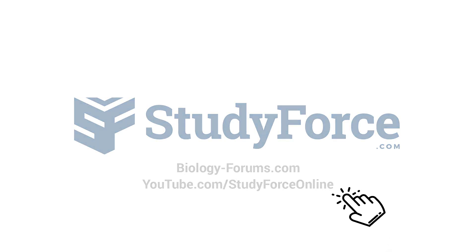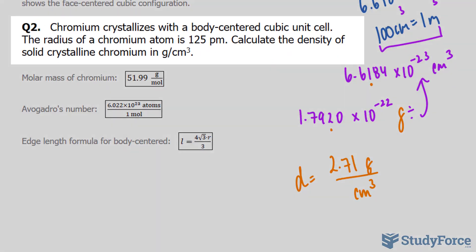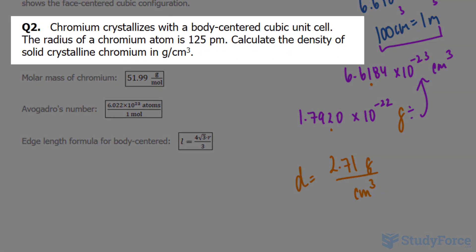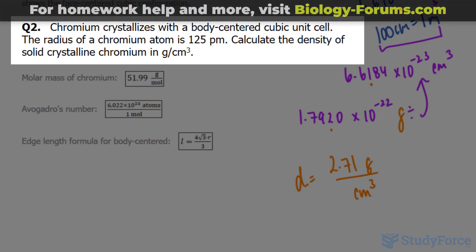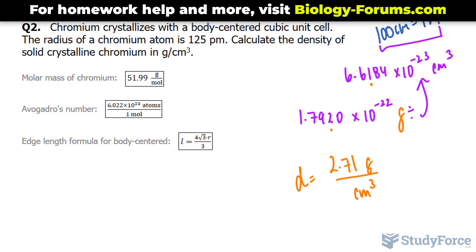Welcome back to question 2 of this series where we relate density to crystal structure. Chromium crystallizes with a body-centered cubic unit cell — notice the difference from question 1, which was face-centered. The radius of a chromium atom is 125 picometers. Calculate the density of solid crystalline chromium in grams per centimeters cubed.